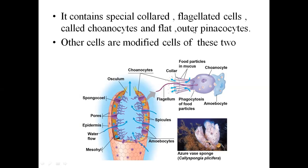Another important cell is the Pinacocyte. Pinacocytes are flat cells found on the outer surface, representing the epidermis of the organism. These cells are also similar to Amoebocytes, which are a modified form.